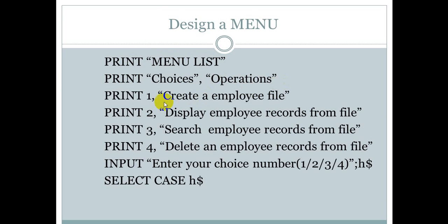If your choice is one, you should create an employee file. If your choice is two, you should display employee records from that file. If your choice is three, you have to search the records of an employee on the basis of any field. If your choice is four, the program should delete employee records from the file on the basis of any one field. So input your choice: one, two, three, or four — this is a menu-based program with only four choices.